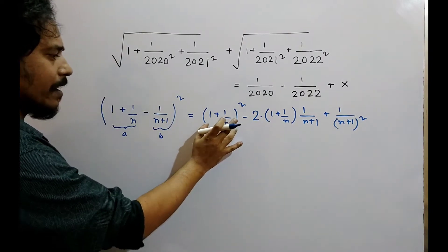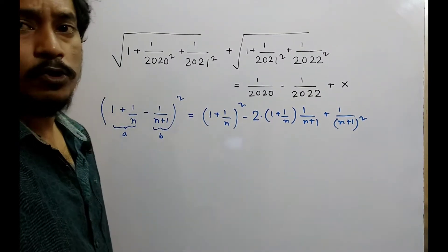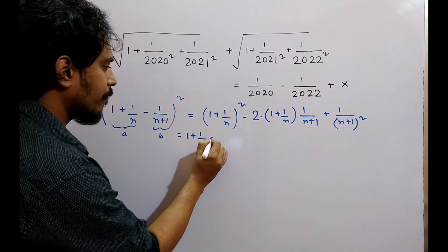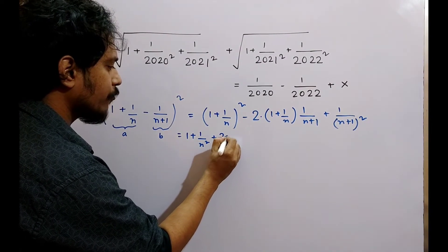Now break here, a plus b whole square identity apply. So, 1 plus 1 by n square plus 2 by 2 into 1 by n.